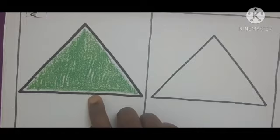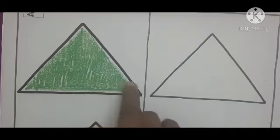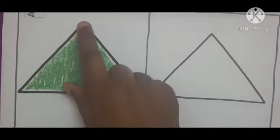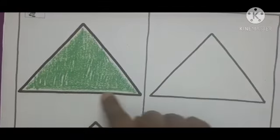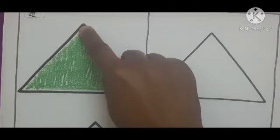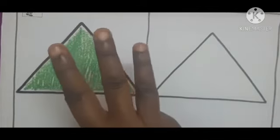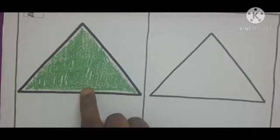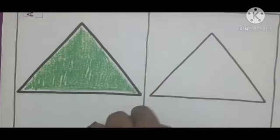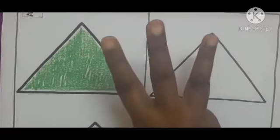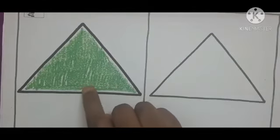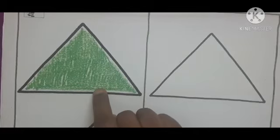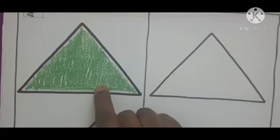How many lines are there to form the triangle? 1, 2, 3 — there are 3 lines for triangle. We made the triangle with 3 lines. How many lines? 3 lines. What is this shape? Triangle.